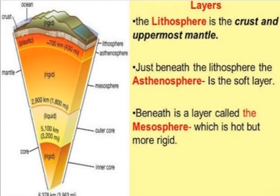Beneath the asthenosphere there is a layer called the mesosphere, which is hot but more rigid. The mantle is solid rock but not completely rigid — it is made up of slightly different silicate rocks with more iron and magnesium. Tectonic plates are also present in the mantle; they are a combination of the outer mantle and crust.